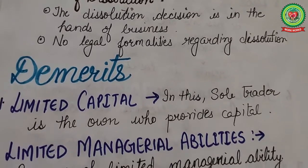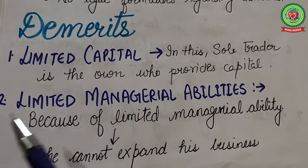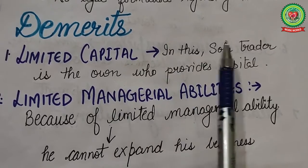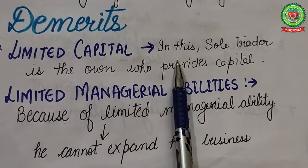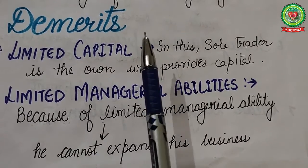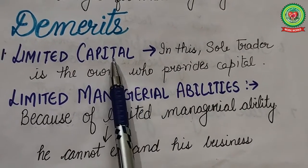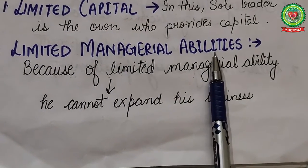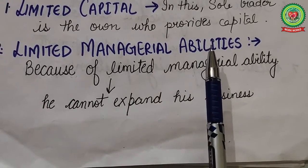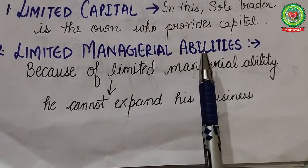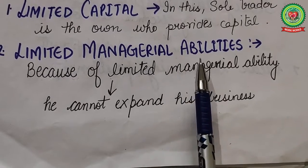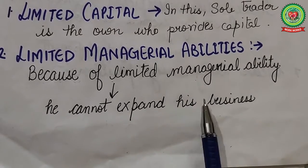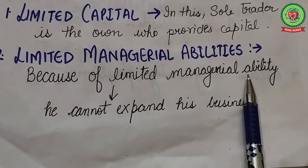Next are the demerits of sole tradership business. The first disadvantage is limited capital — the sole trader is the owner who provides capital, so he has limited capital resources and runs the business with his own money. Next is limited managerial abilities — as the market changes on a day-to-day basis, the sole trader being an individual cannot be perfect in handling all these issues, and he cannot expand his business freely because of his limited managerial ability.